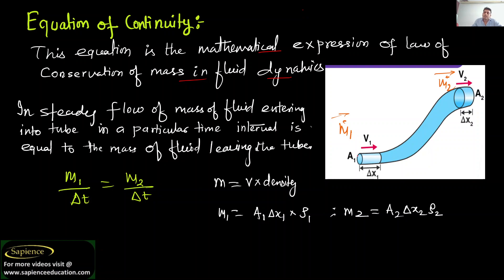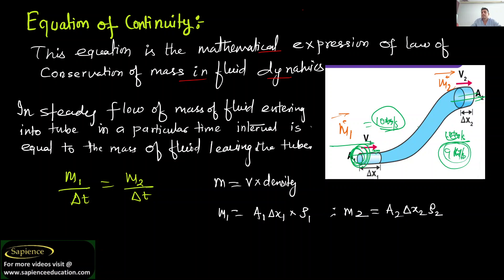Suppose this is your pipe. When a mass flows in, for example 10 kg per second, then mass out will definitely come out as 10 kg per second. If mass is going in at 10 kg per second and mass is coming out at 9 kg per second, then 1 kg per second will accumulate at the pipe and the pipe will burst.